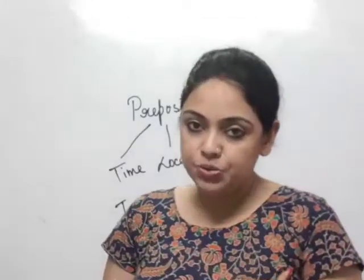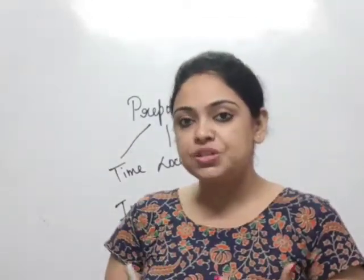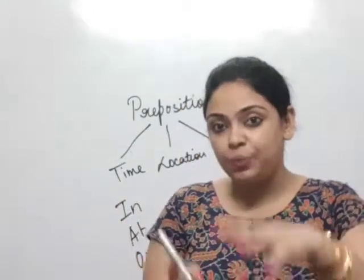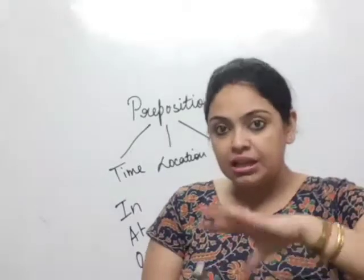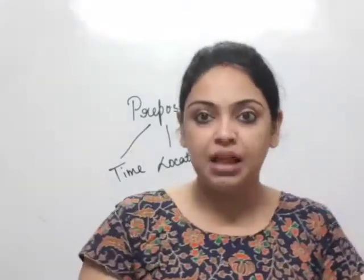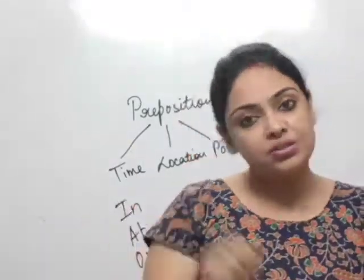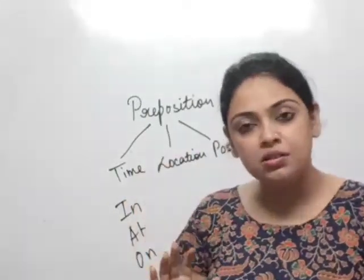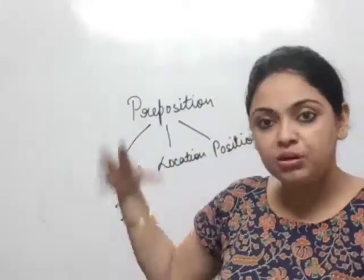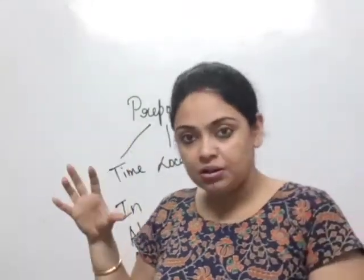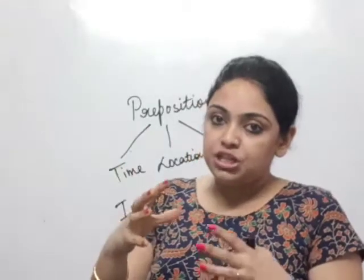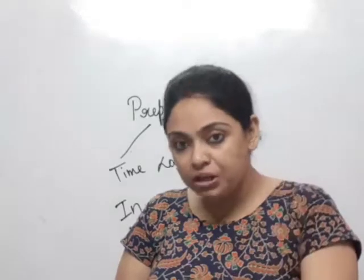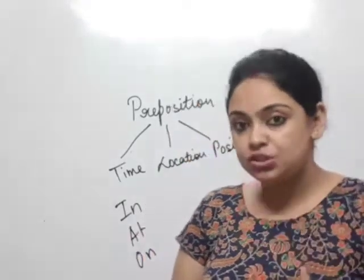"On" is used in reference to a flat surface where a thing is placed. For example, if I put this marker on the table, I would say the marker is on the table. There is a painting behind me on the wall — it is mounted on the wall. So we need to have a surface in order to talk about "on". If you are using "on" in your sentence, there has to be a surface.